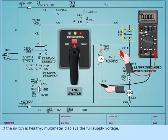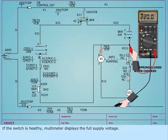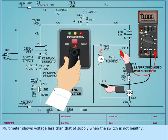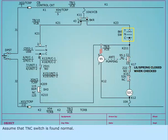If the switch is healthy, the multimeter displays the full supply voltage. The multimeter shows voltage less than that of supply when the switch is not healthy. Assume that the TNC switch is found normal.